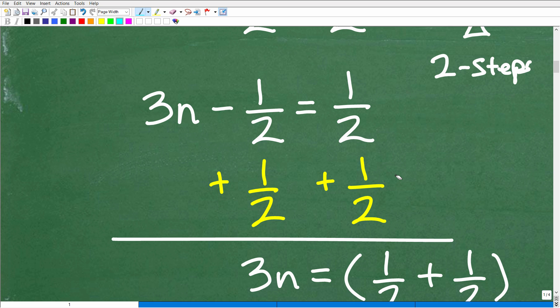Now, notice I'm kind of working in a vertical format. You can work horizontally. In other words, you could be like 3n minus one-half plus one-half. You could kind of put your work this way.